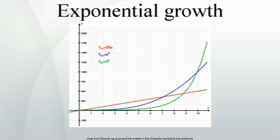Limitations of models: Exponential growth models of physical phenomena only apply within limited regions, as unbounded growth is not physically realistic. Although growth may initially be exponential, the modeled phenomena will eventually enter a region in which previously ignored negative feedback factors become significant, leading to a logistic growth model, or other underlying assumptions of the exponential growth model — such as continuity or instantaneous feedback — break down.